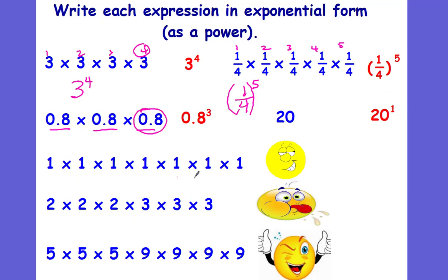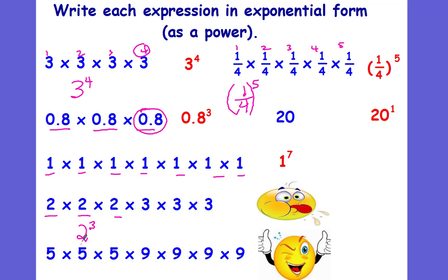What is being repeated? The 1. How many times is it being repeated? 1, 2, 3, 4, 5, 6, 7 times. So this would be 1 to the 7th power. Here we have a 2 — how many times is it being repeated? 1, 2, 3 times. And then we change numbers. So the 2 is being repeated 3 times: this is 2 cubed, or 2 to the 3rd power. And then we have 3, and it's being repeated 3 times as well, so times 3 to the 3rd power. So 2 cubed times 3 cubed.